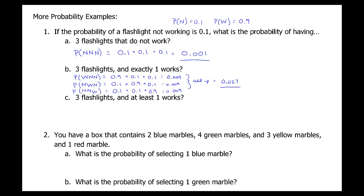So there are three ways exactly one out of three can work. We find the probability of each and add them together. The last question: with three flashlights, what's the probability that at least one works? At least one could mean exactly one — that was calculated in the previous part as 0.027.